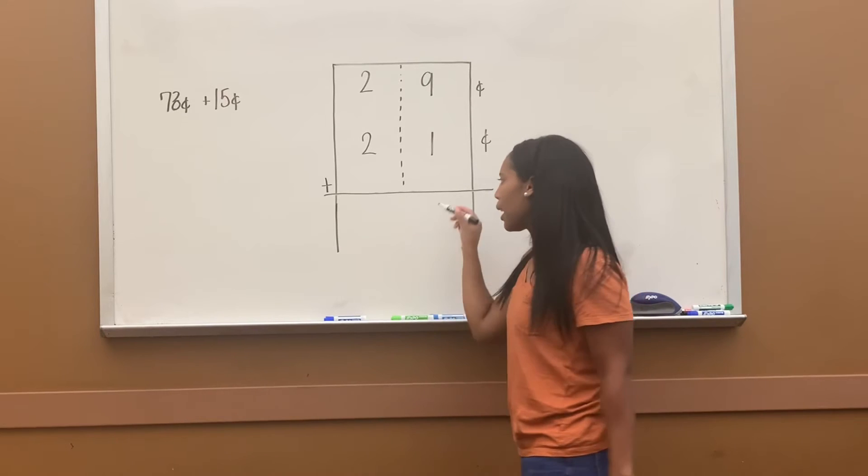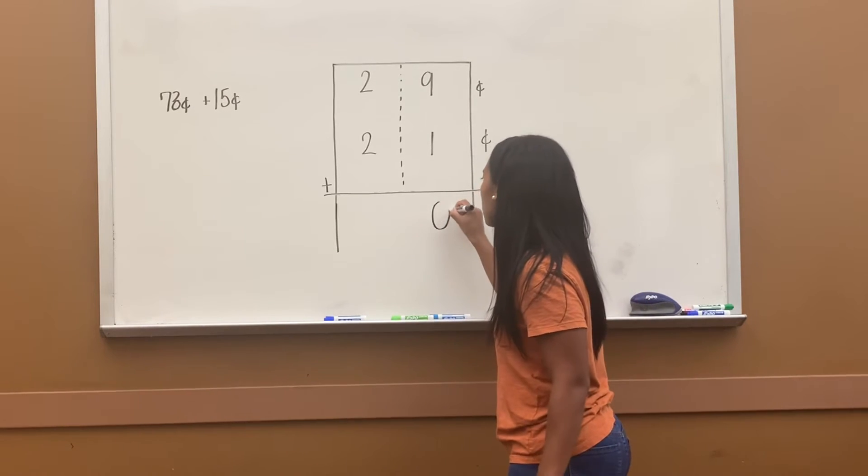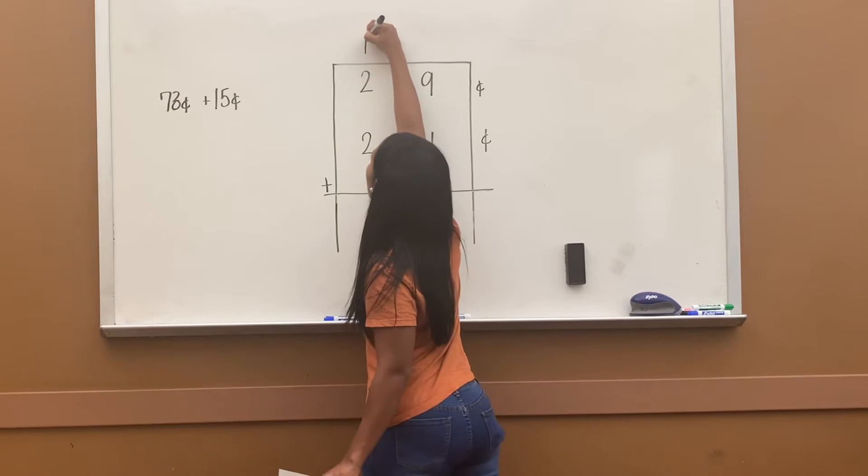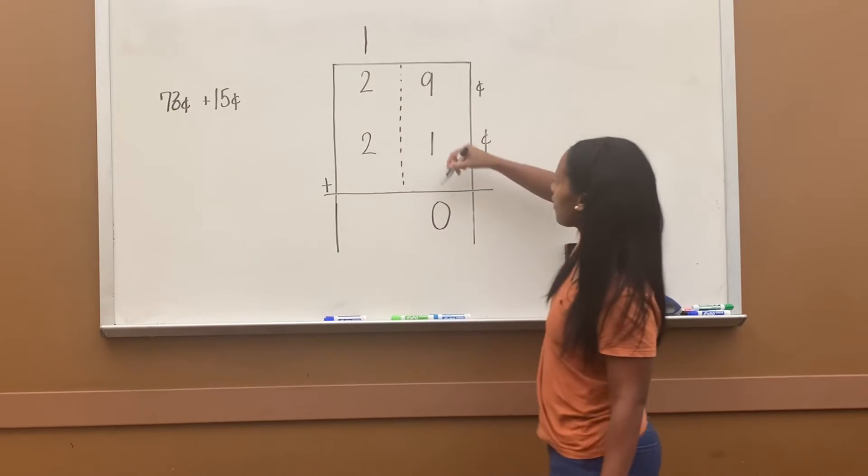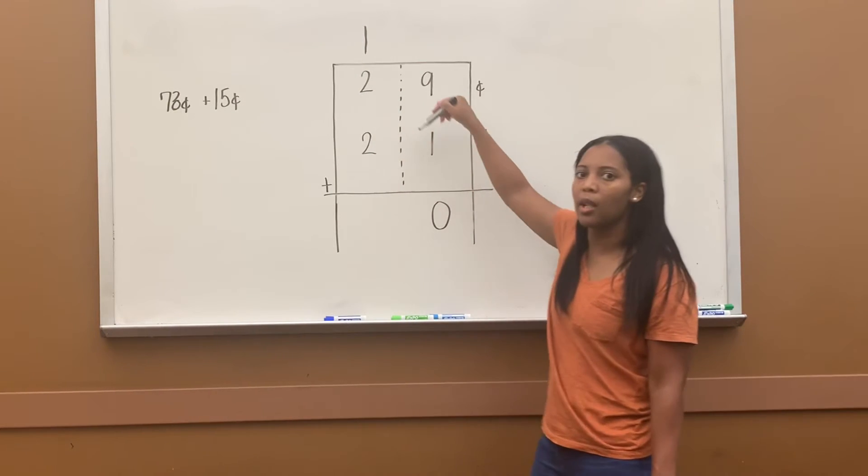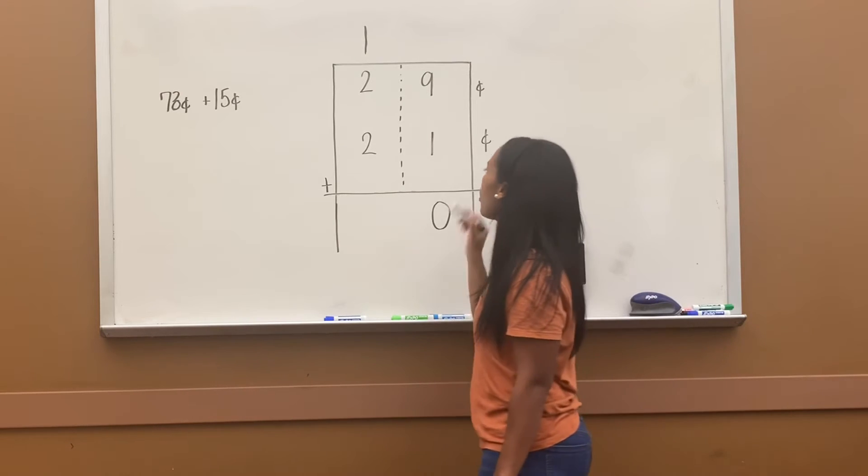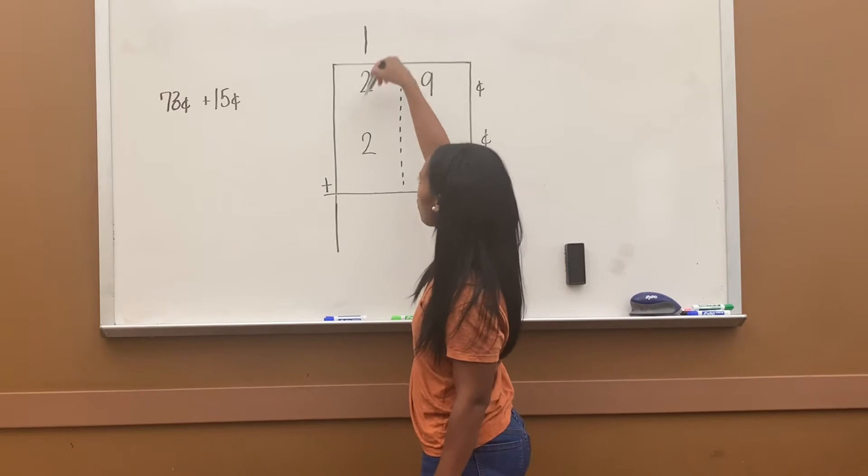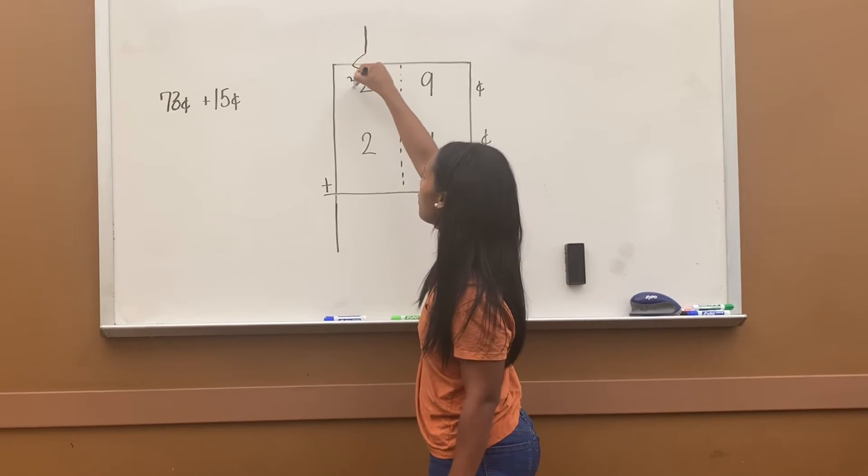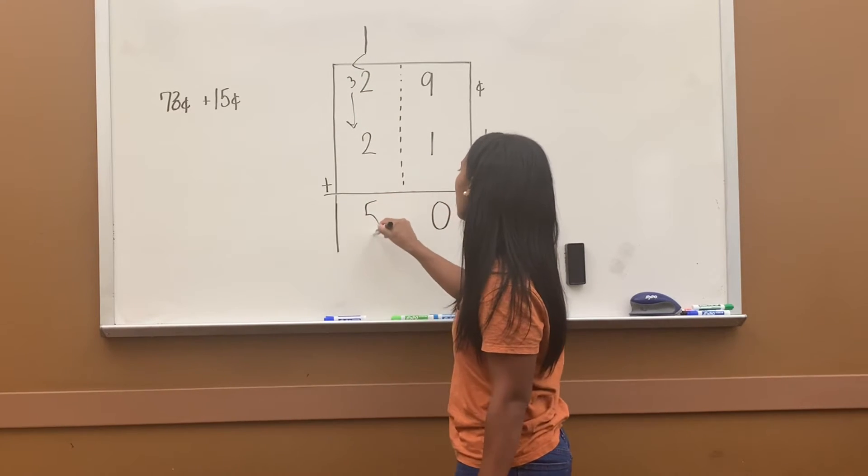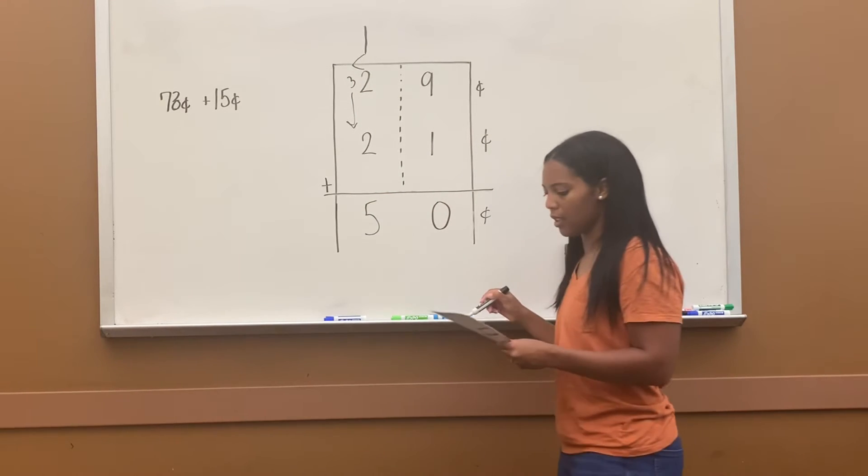So remember, I can't put the number 10 here. I only put the 0 from 10, and I put the 1 above here. I still have the number 10, it's just set up a little differently. So now 1 plus 1 is 2. Let's add my 3 front numbers. 1 plus 2 is 3, 3 plus 2 is 5. The answer is 50 cents.